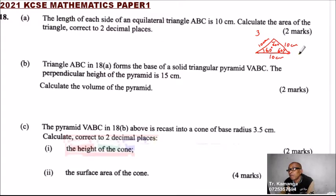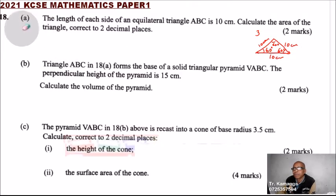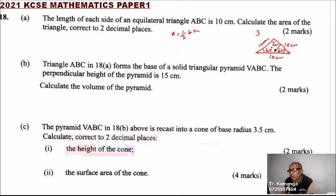One of the methods for finding the area of a triangle is half base times height — the simplest method. Area equals half base times height. But here we don't have the height, although we can calculate it. The second method is: area equals half a·b·sin θ, where a and b are two sides and θ is the included angle.